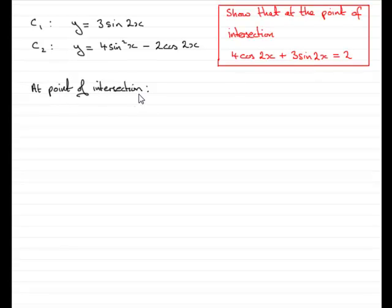Well at the point of intersection, you'd expect the y coordinates for both curves to be exactly the same for a particular set of values of x. And if that's the case, then we can say that 3 sine 2x must equal 4 sine squared x minus 2 cos 2x at that point of intersection. So there's our starting point.